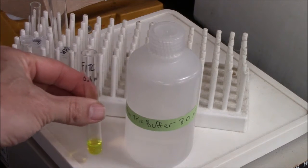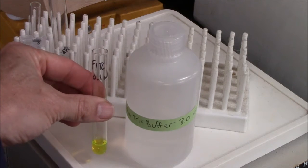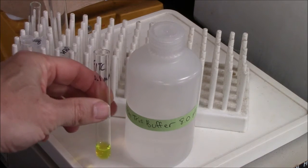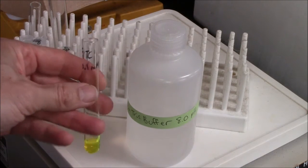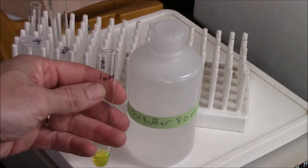I've made a solution of FITC, Fluorescein Isothiocyanate, in this tris buffer, 30 millimolar tris buffer, pH 8.0. Concentration of the FITC is 0.1 millimolar.